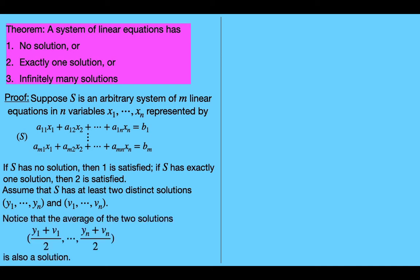First, notice that the average of the two solutions — given by this n-tuple — is also a solution. Think about why that would work. Essentially, we need to show: if we plug the first element in for x sub 1, the second element in for x sub 2, and so on up to the nth element for x sub n,